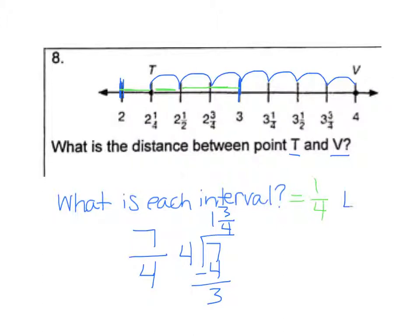You could also do 4 minus 2 and 1 fourth. You could take where V is and subtract where T is. And that would give you 3 and 4 fourths, which would give you the same answer of 1 and 3 fourths. Either way that you chose to answer that would work.